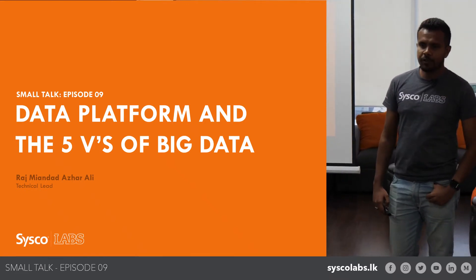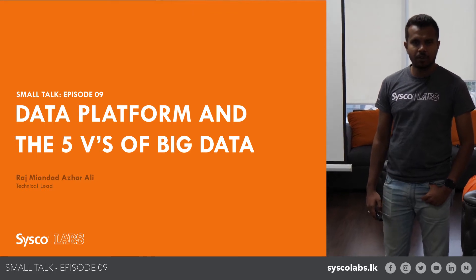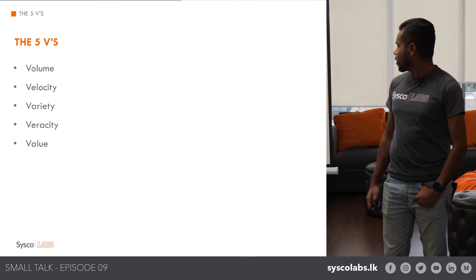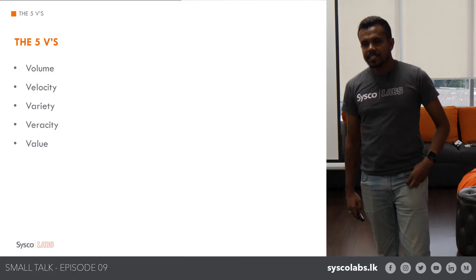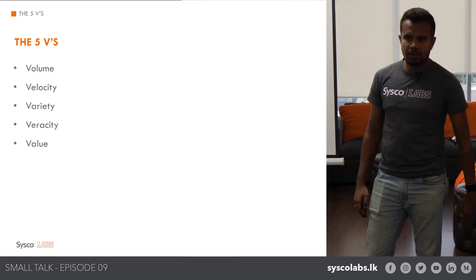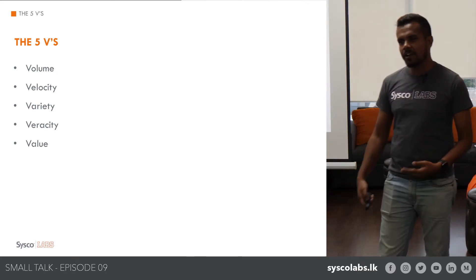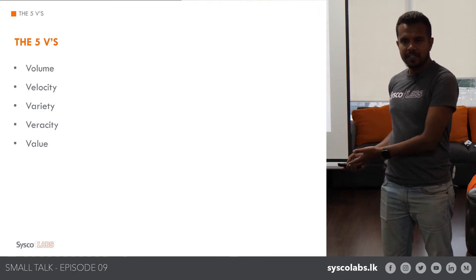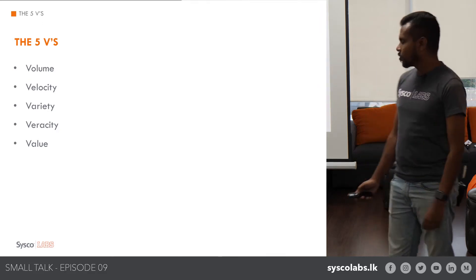I'm going to talk about the data platform and the Five V's, and how we have tried to solve the Five V's in the big data domain. The Five V's in big data are volume, velocity, variety, veracity, and value. There's a misconception that if you use a big data framework like Hadoop or NoSQL databases, all of these would be handled automatically — that's not always the case.